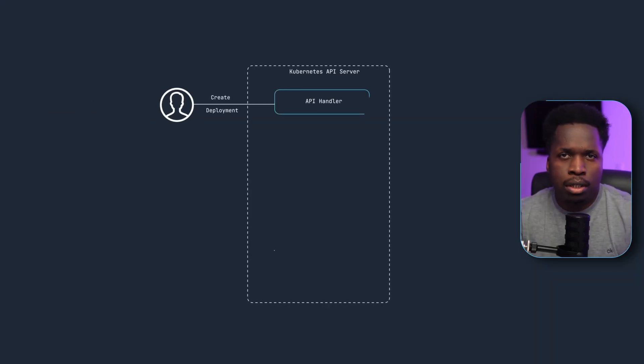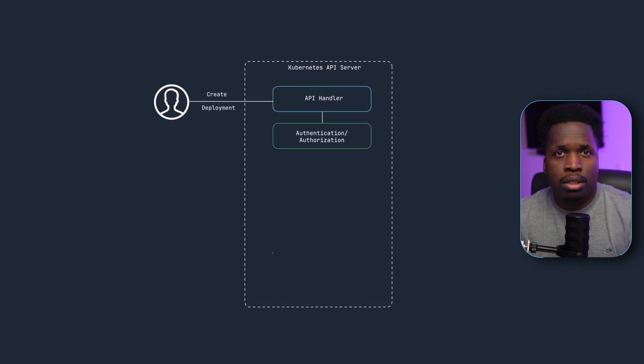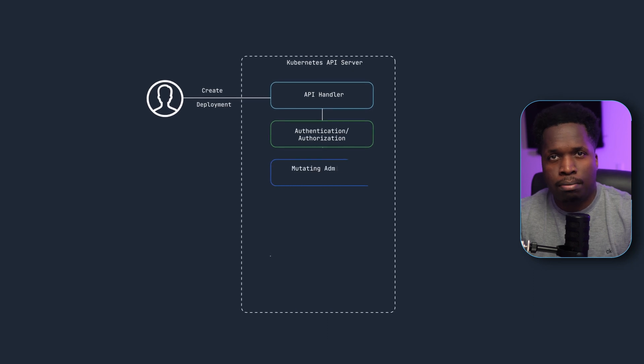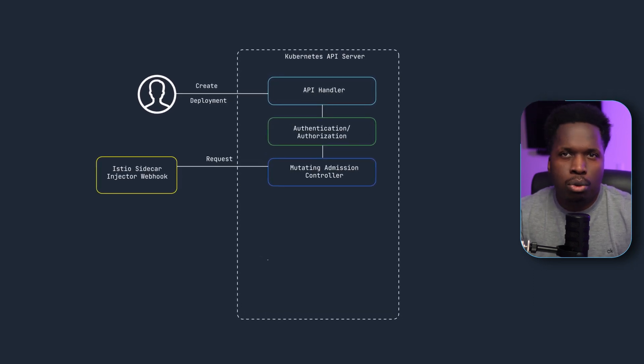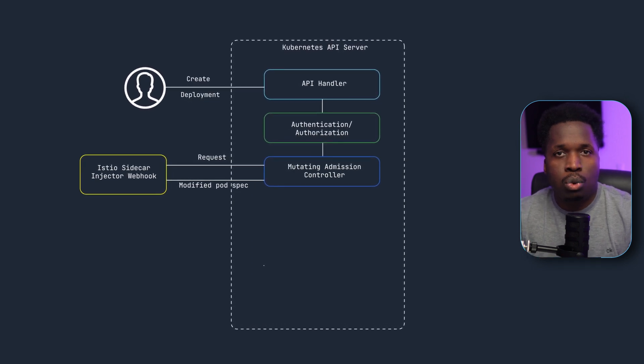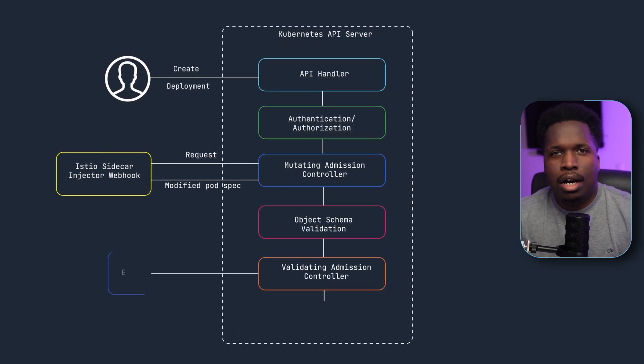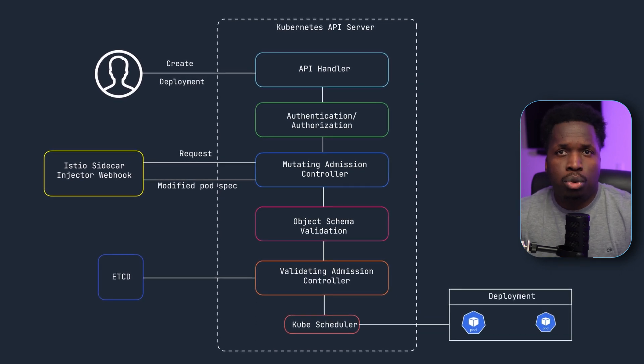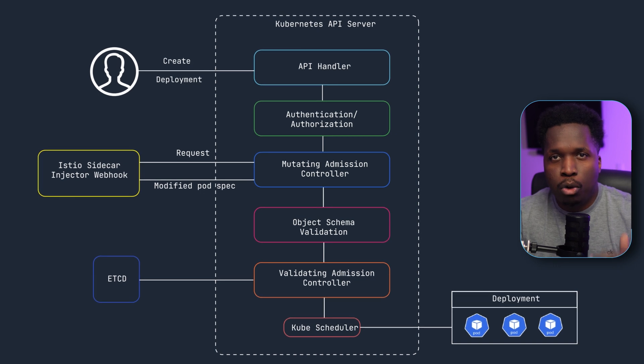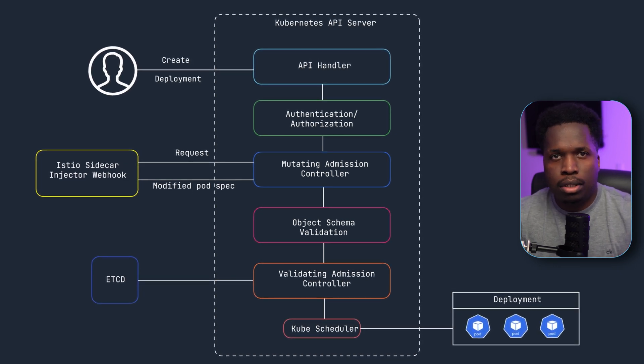When using automatic injection, Istio makes use of a Kubernetes admission controller — specifically the mutating webhook admission controller — to automatically add Istio container definitions to the pod spec of new pods. An admission controller is a piece of code that intercepts requests to the Kubernetes API server prior to persistence of the object, but after the request is authenticated and authorized. It can be used to enforce custom rules and policies, for example ensuring all deployments have specific CPU and memory limits, and can modify the deployment YAML before it is persisted into etcd.